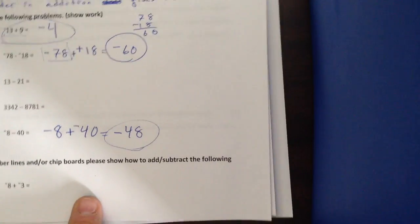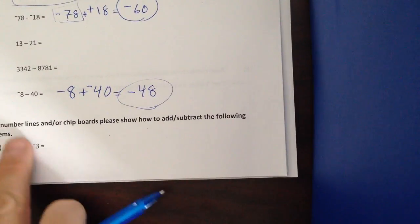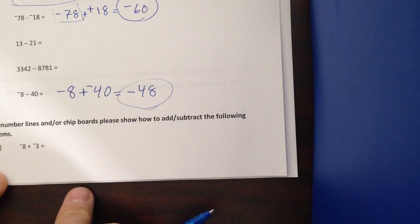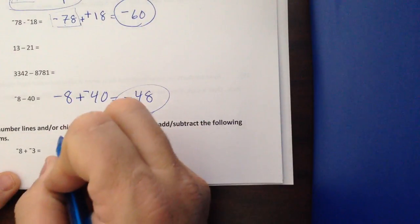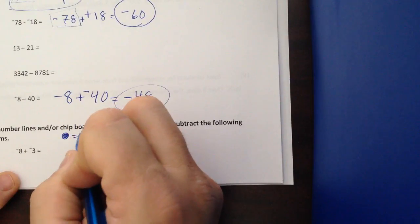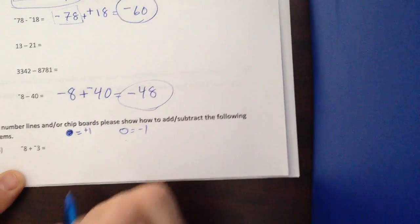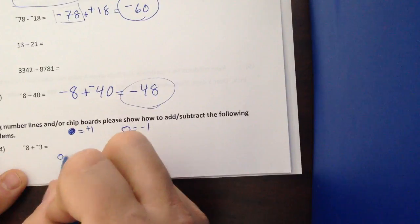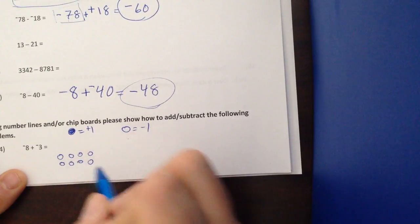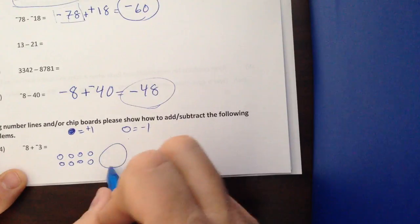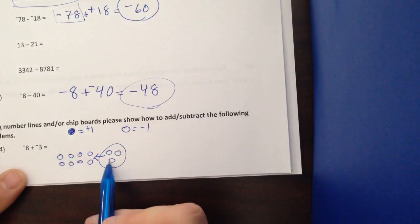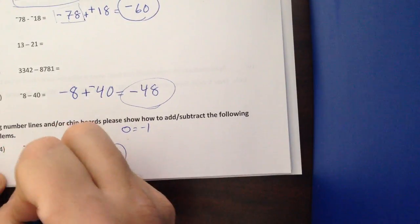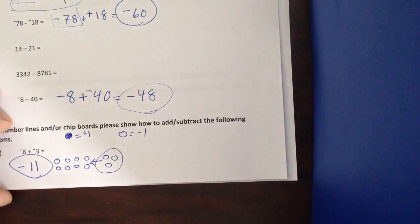This next section, use number lines or chip boards to show your results. So I have negative 8 plus negative 3. So on a chip board, if I say, you know, this is plus 1, and this is negative 1. On a chip board, I have negative 8. 1, 2, 3, 4, 5, 6, 7, 8. And I'm going to add in 3 more. They're being added. So I have 8, 9, 10, 11. So my answer is negative 11. So showing that using chips or a number line.